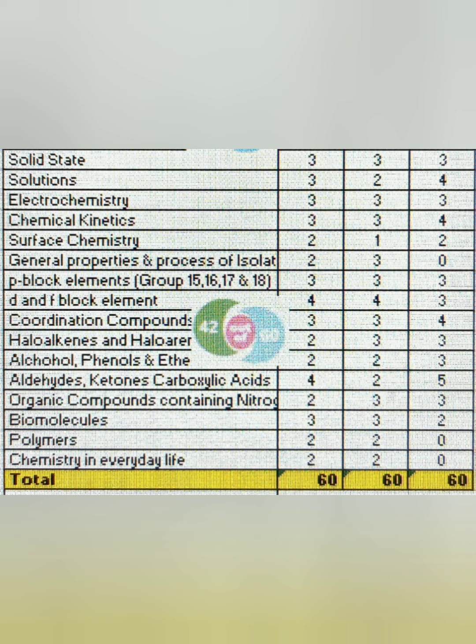Haloalkanes and haloarenes: three questions for both. Alcohols, phenols, and ethers: three questions. Aldehydes and ketones: five questions and four questions respectively — this shows the topic is very, very important, so put additional time on your calendar to study this. Organic compounds containing nitrogen: three questions. Biomolecules: two to three questions. Due to syllabus reduction, polymers and chemistry in everyday life had no questions last year, but previously two questions each were asked. Assuming a full-fledged syllabus this year, you should study all of these.